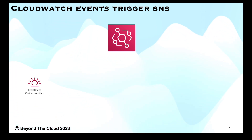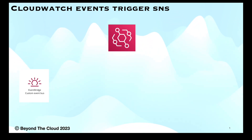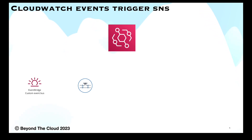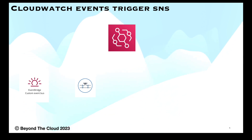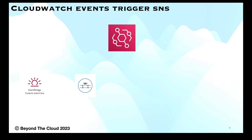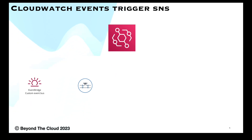Enabling event discovery on an event bus will generate EventBridge schemas for events on a bus, but that may incur some costs. A second vital component is Pipes. Pipes is a new concept — it has a source and a target, and in between it can filter and enrich events before delivering them to the target. Currently supported sources include Kinesis, SQS, DynamoDB, Amazon MQ, Kafka, and Amazon MSK, though not all sources are supported yet.